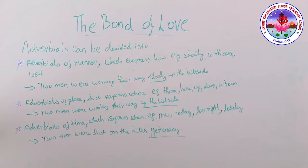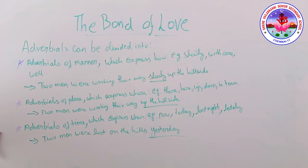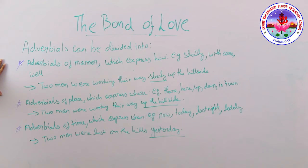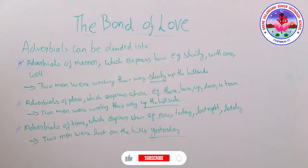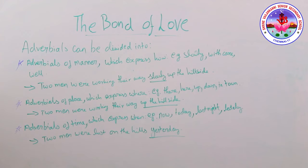You already know that adverbials can be divided into manner, place, time, frequency, and other types. Adverbial of manner expresses how something is done — for example: slowly, with care, well. Adverbial of place expresses where — for example: there, here, up, in town. Adverbial of time expresses when something happened — for example: now, today, last night, lately.